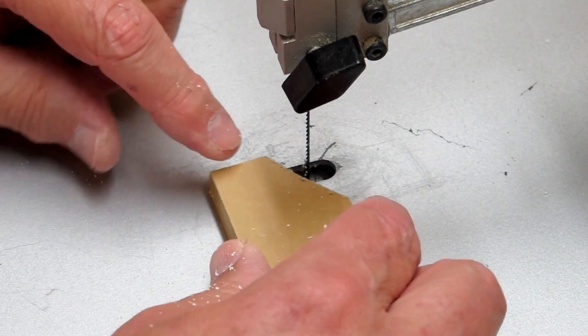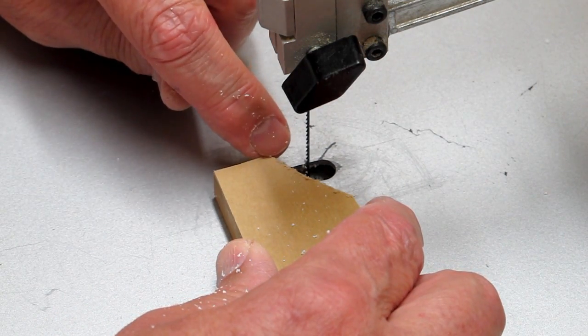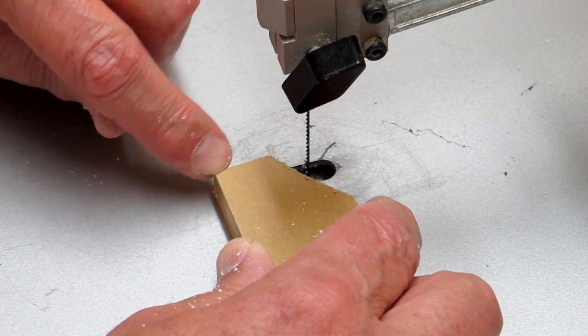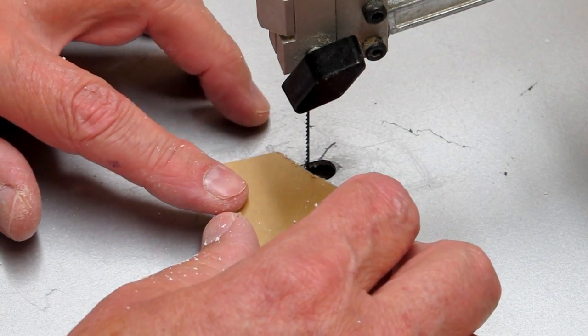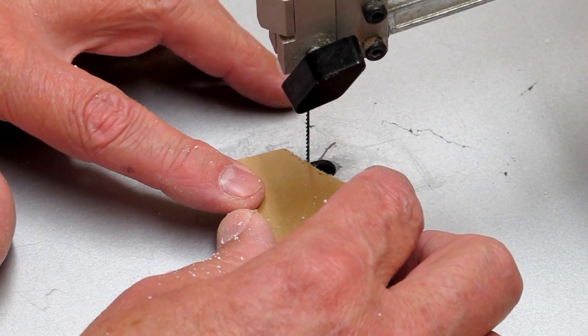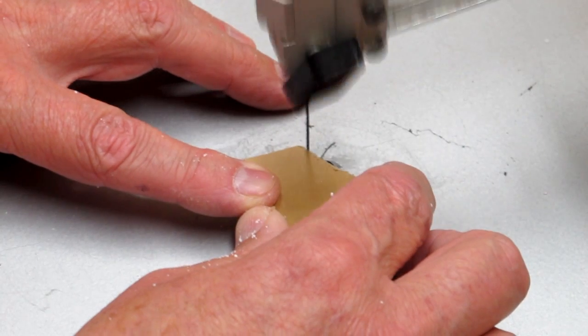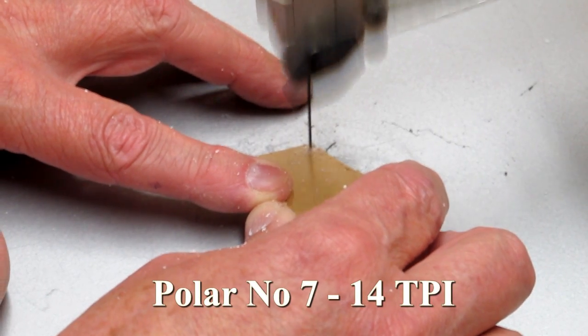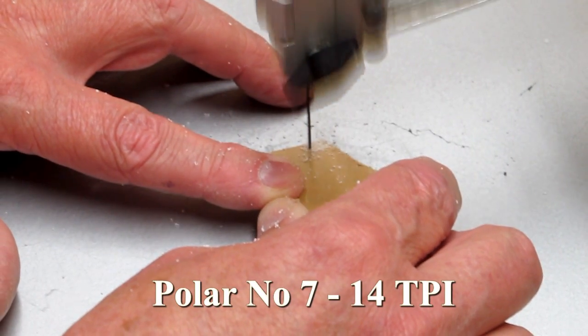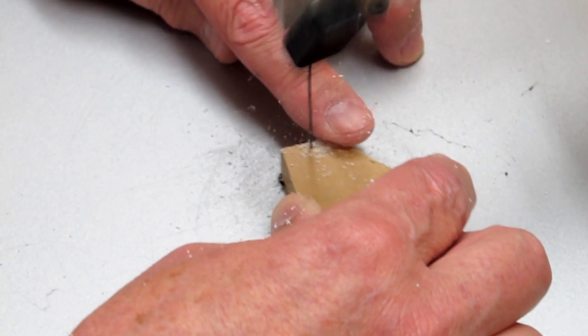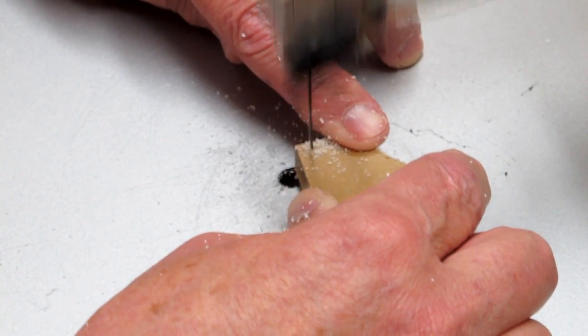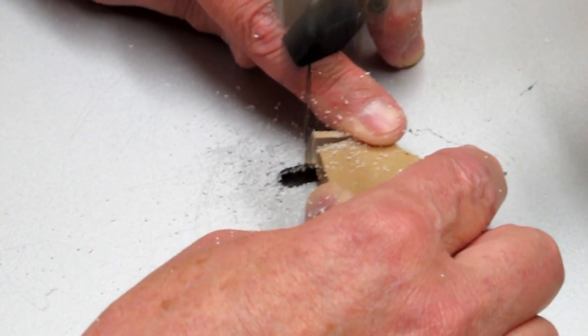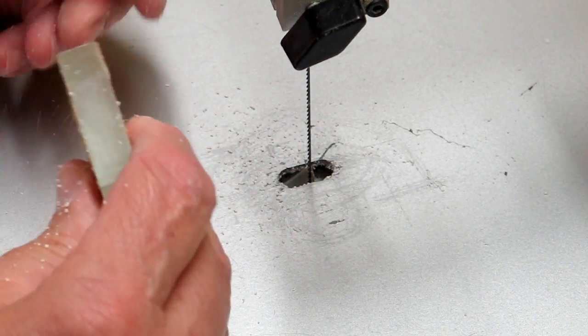This is a Polar No. 7 blade and while we cut the plexiglass you'll see free flowing chips coming off the top. That usually tells you you're getting a pretty good cut. Nice clean cut, no melting.